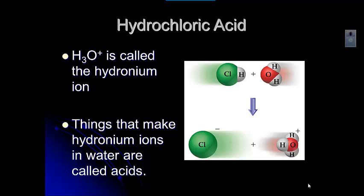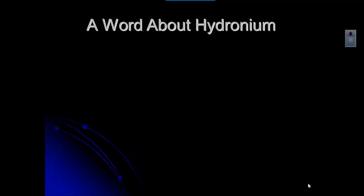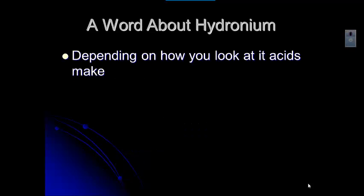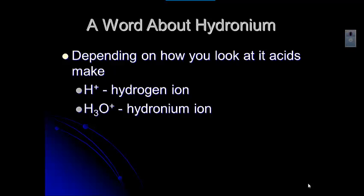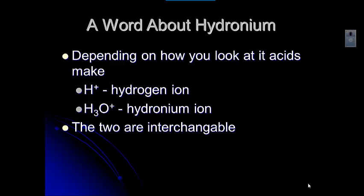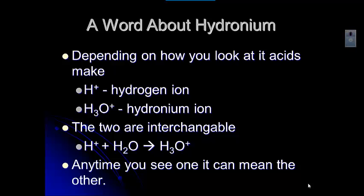Let's talk a little more about hydronium because that's really new. Acids make either H+ (hydrogen ions), but they don't really exist in water — they're not very stable; they're very small and positively charged, so they're very attracted to water molecules and form hydronium ions. You can think of those as interchangeable: H+ and water makes hydronium, so H+ can mean H3O+ and H3O+ can mean H+.